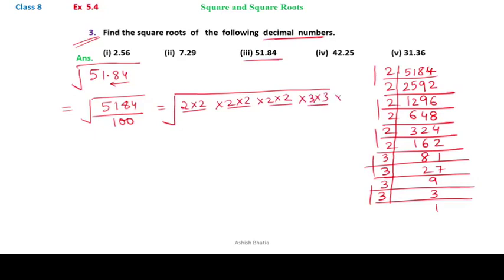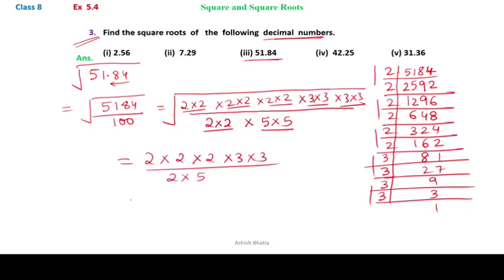And 2 pairs of 3 in the numerator part. And in denominator it's a 100, so 100 is 4 into 25. 4 we split up into 2 into 2, and 25 is 5 into 5. Now what do we get: 2 from each number, so 2 into 2 into 2 into 3 into 3 divided by 2 into 5.